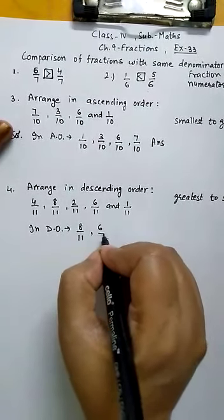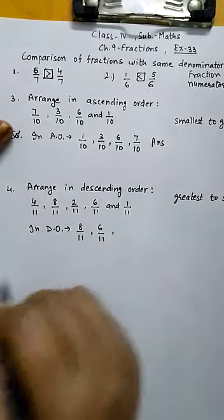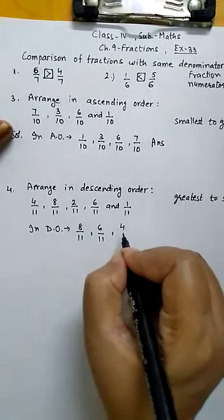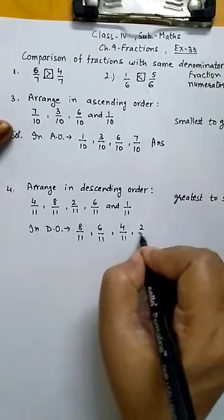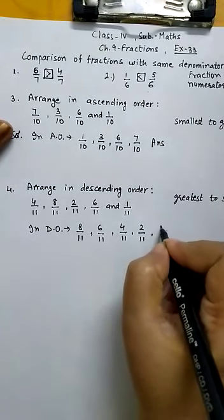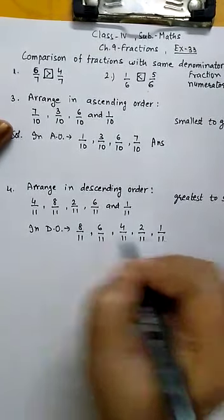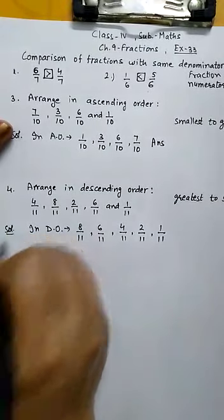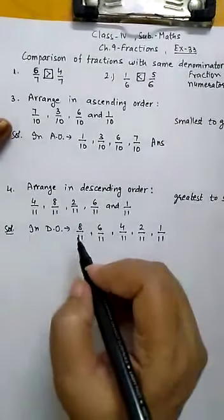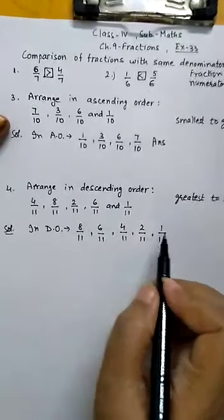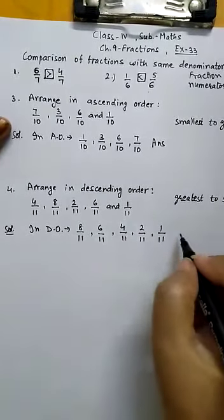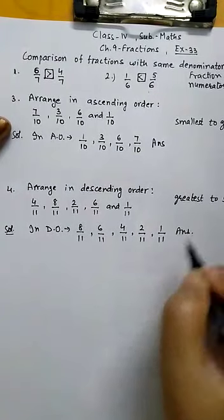Then 6/11, then 4/11, then 2/11, and at last 1/11. In descending order, we arrange the numerators from greatest to smallest. This is the answer.